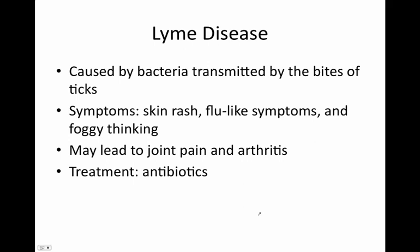Lyme disease — the transmission vector is usually a tick, which transmits bacteria. The symptoms are a skin rash, flu-like symptoms, and foggy thinking initially, but then years later this can lead to joint pain and arthritis. Treatment is antibiotics, but if not caught early enough, antibiotics typically won't work. So if you're bitten by a tick, watch for the skin rash and think about getting antibiotics, because if you wait, it lies dormant and will come up later in life.